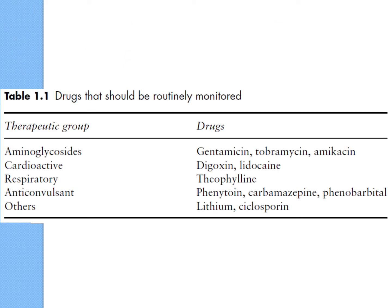Examples of TDM drugs include digoxin for the heart, theophylline for asthma, phenytoin as an anti-epileptic, carbamazepine, phenobarbital, lithium, and cyclosporine. A lot of them are in IV form, but some are oral — for those you need to counsel patients more carefully about dosing. There are also many IV antibiotic drugs requiring frequent TDM, like gentamicin. For inpatients, it's much easier to adjust and taper the next dose.